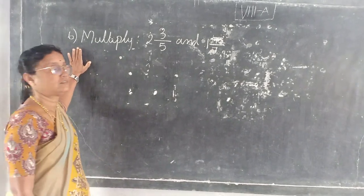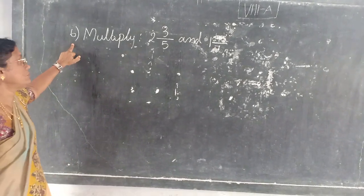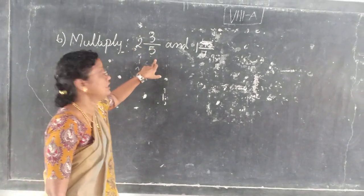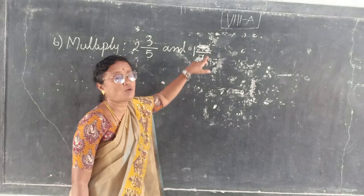Good morning. Today's problem is: multiply 2 3/5 and 1 4/7.